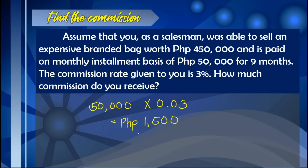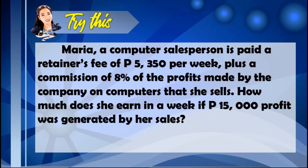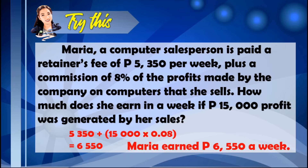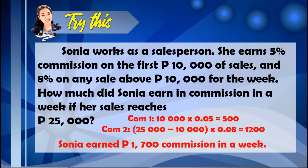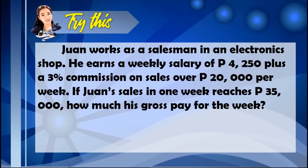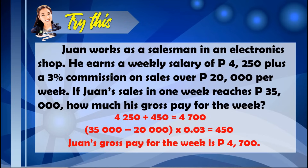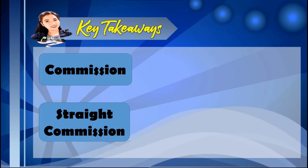After discussing the types of commission and how to solve for each, let's check practice problem answers. Maria earned $6,550 a week — an example of salary plus commission. Sonia earned $1,700 commission in a week — an example of graduated commission. And one's gross pay for the week is $4,700 — an example of commission based on quota.